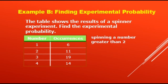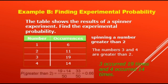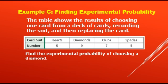Next example: the table shows the results of a spinner experiment. Find the experimental probability of spinning a number greater than 2. The numbers 3 and 4 are greater than 2. So 3 occurred 19 times and 4 occurred 14 times. P(greater than 2) = 19 plus 14 = 33, over 50, which equals 0.66.